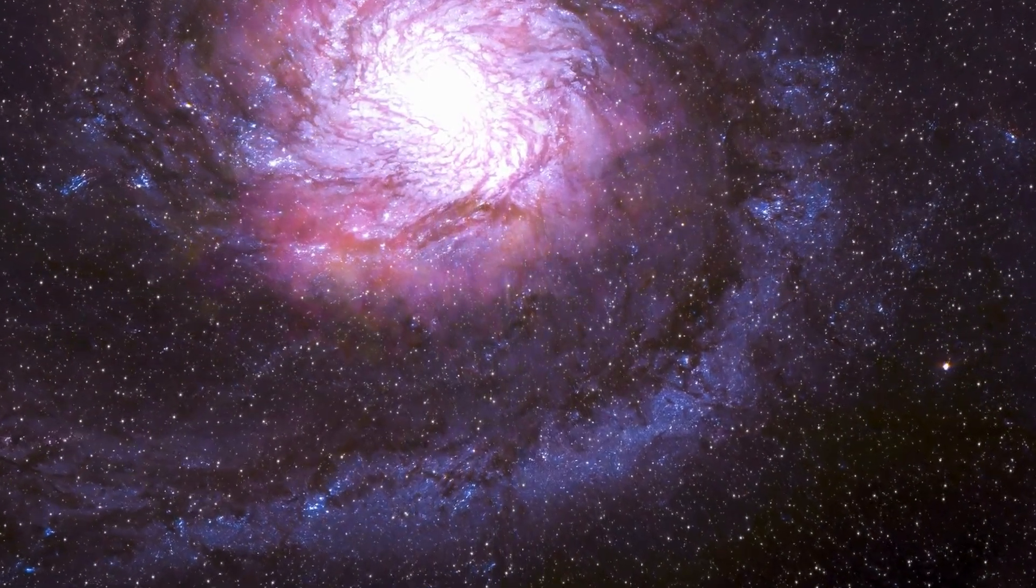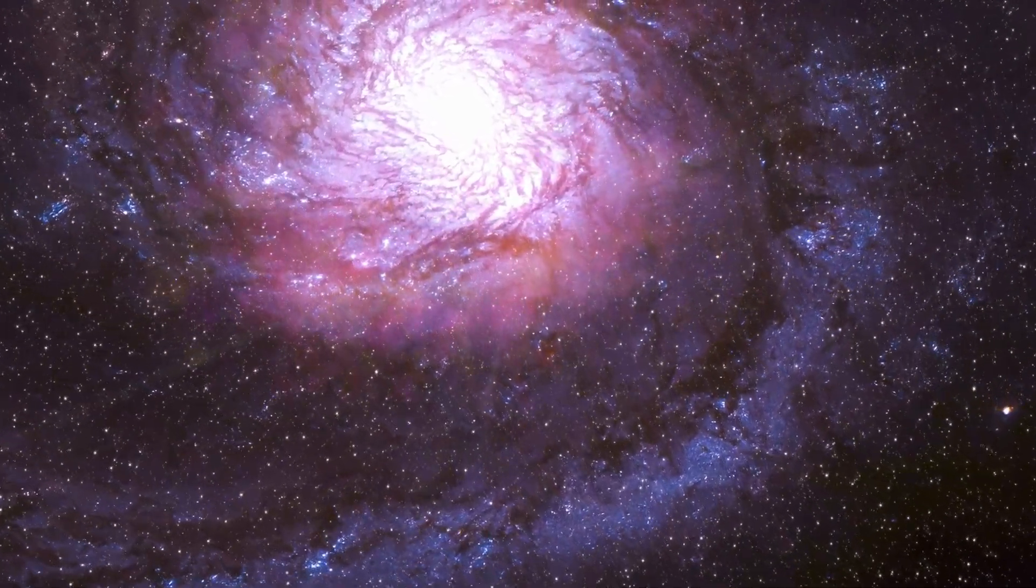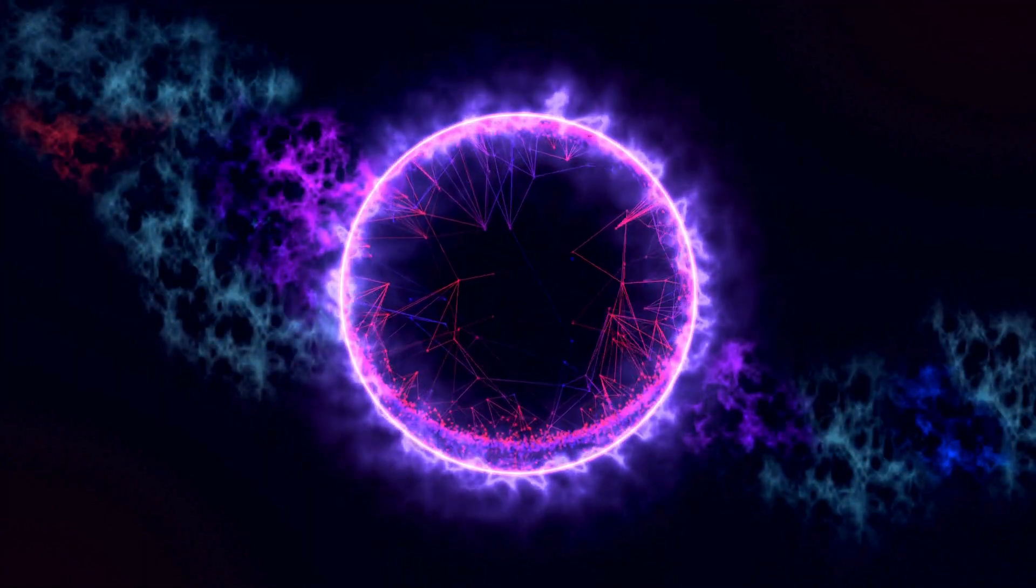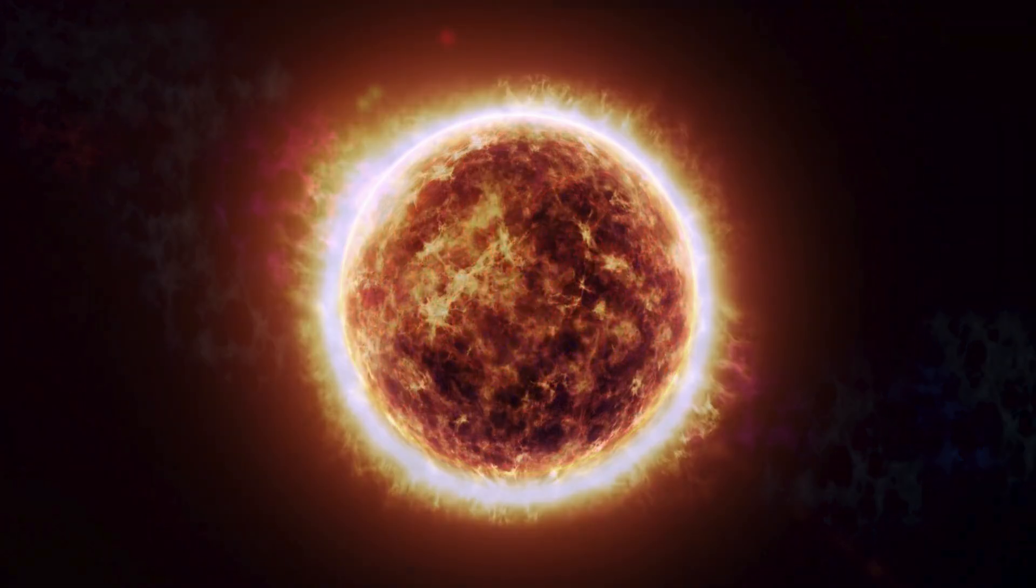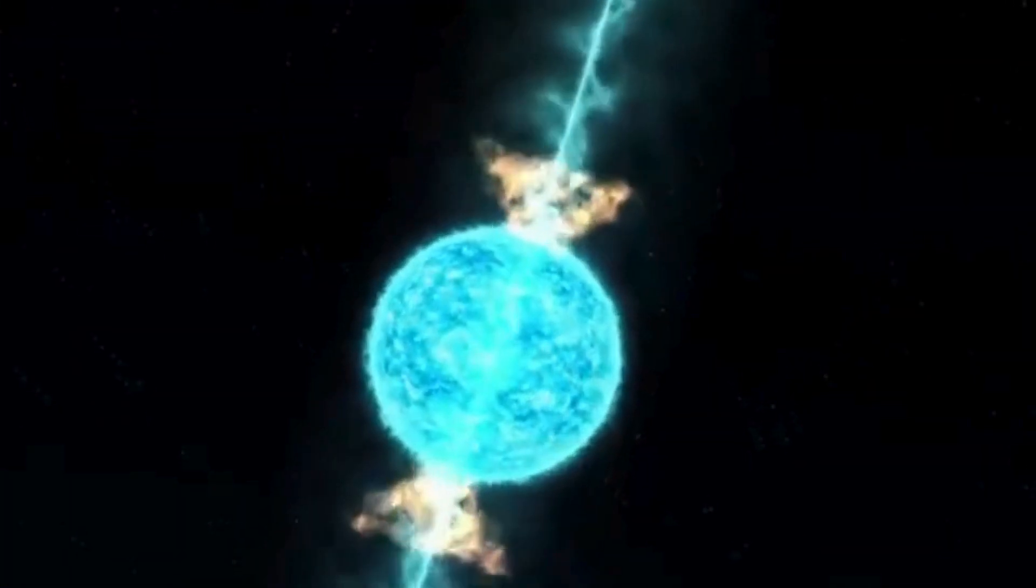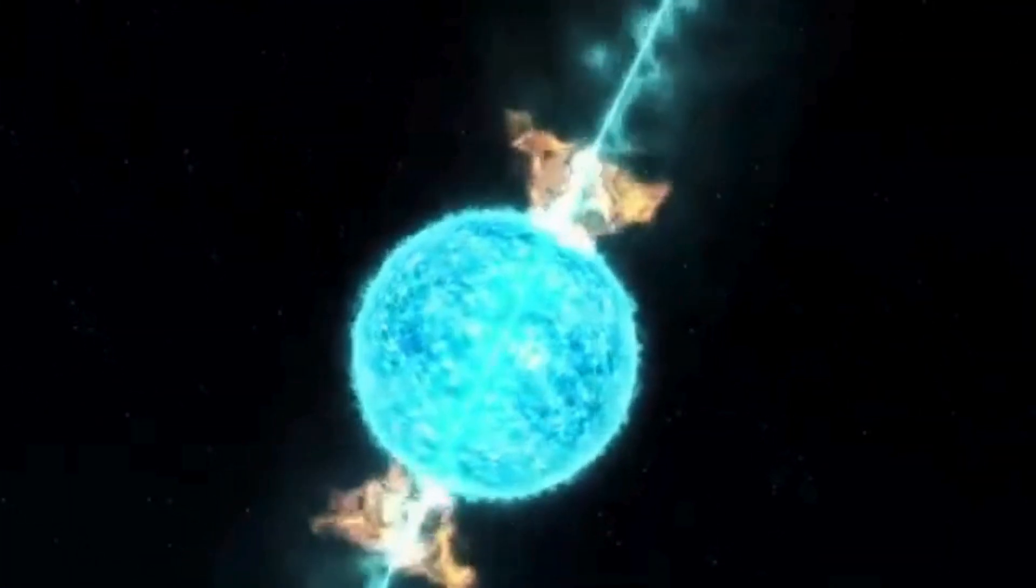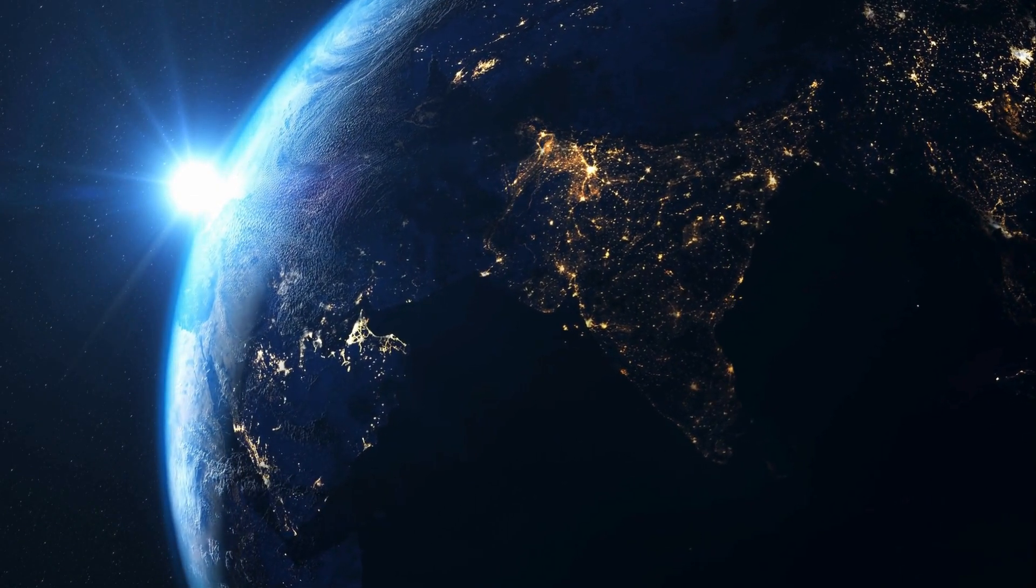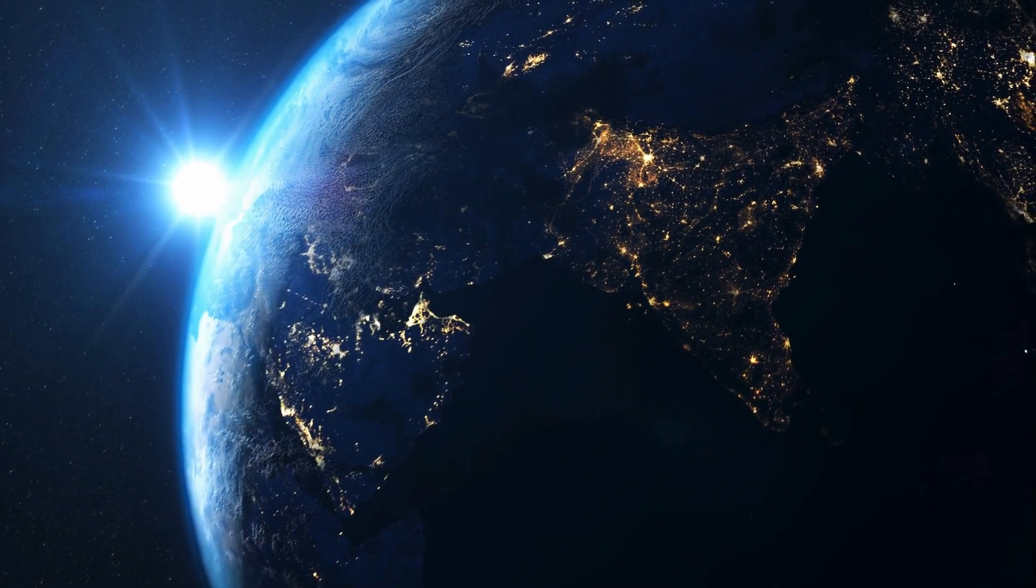If a GRB were to strike our planet head-on, it could strip away much of the ozone layer, our primary defense against harmful ultraviolet radiation from the sun. The resulting exposure could devastate ecosystems, harm human health, and potentially trigger mass extinctions.